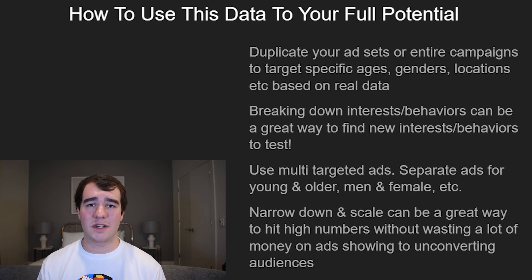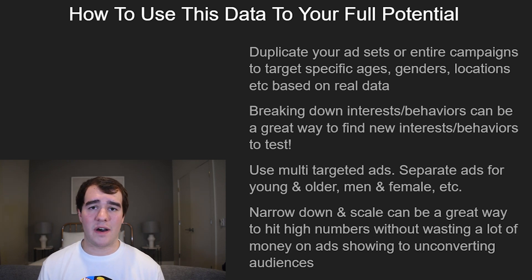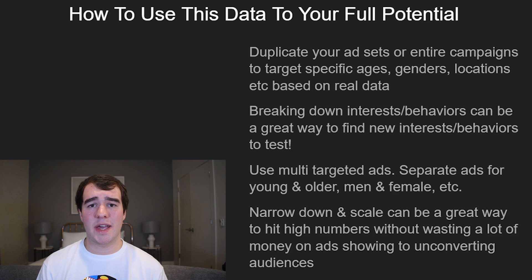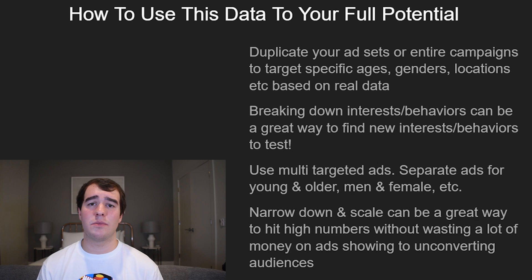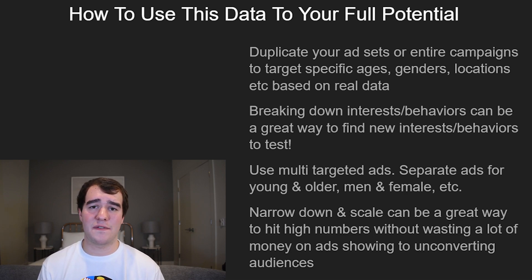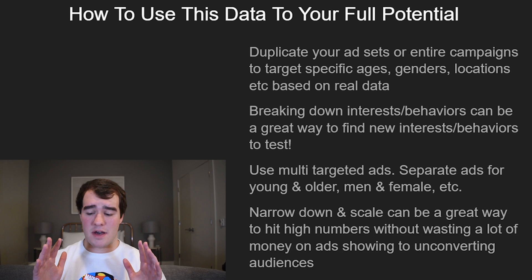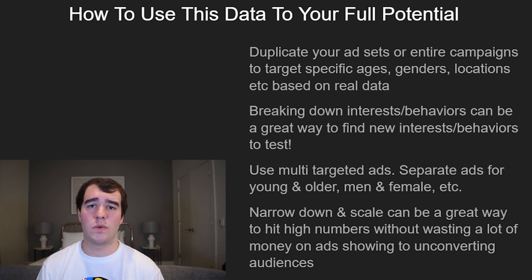A couple ideas on how to actually use this data: obviously if you get data on ages, genders, locations, and devices, you can go into your ad account and create new campaigns — essentially just replicating the campaign but narrowed down by age. So if you were doing 18 plus before, in your new campaign maybe you're only going to do 18 to 24. This could be a really good way to scale because it gives you a lot of new campaigns to go out and create over the next week or two. Breaking down interests and behaviors is also a great way to find new interests and behaviors to test.